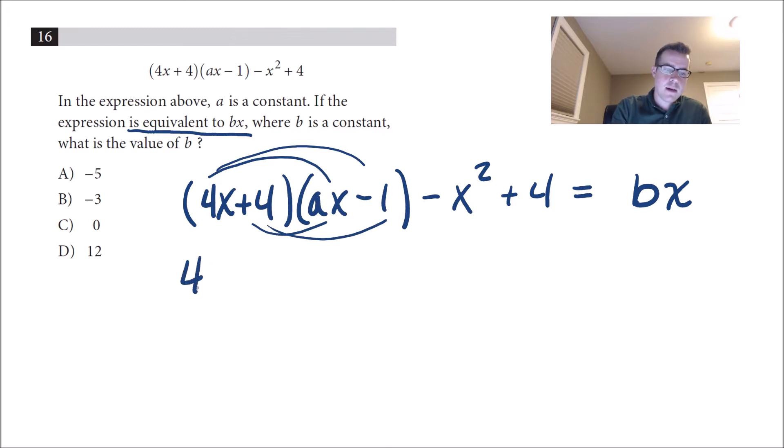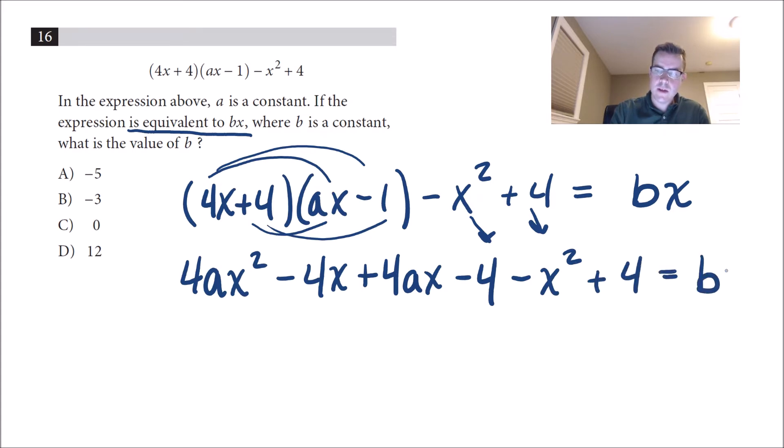So I'll get here that becomes 4ax squared minus 4x plus 4ax, and then minus 4. And then I'm just going to bring this all down. So minus x squared plus 4 equals bx.